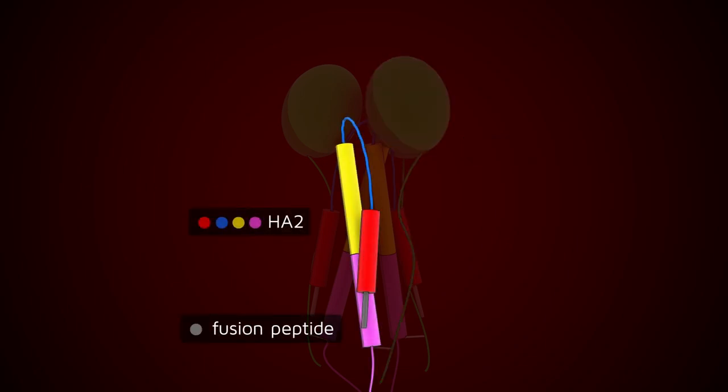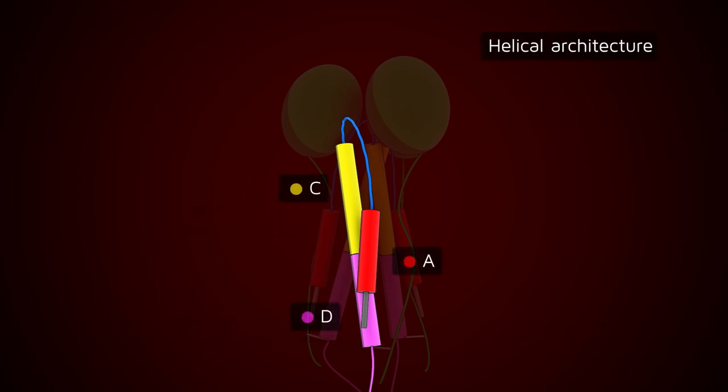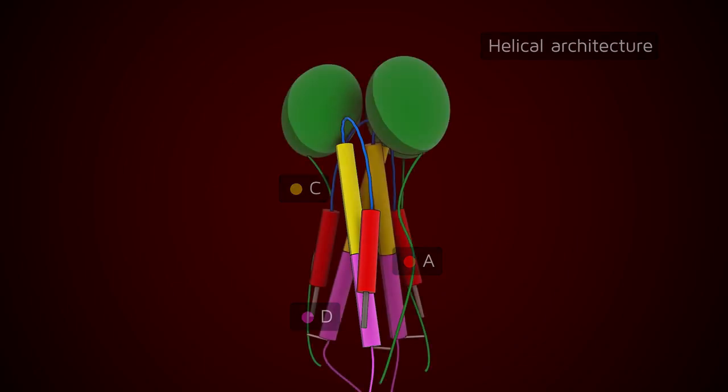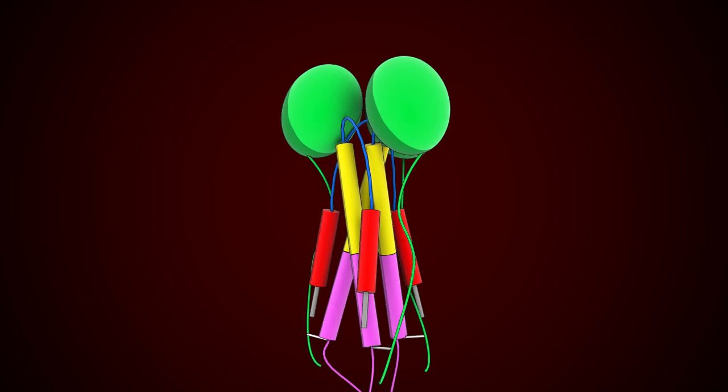It has a short sequence of hydrophobic residues called the fusion peptide at its amino terminal end. It is anchored in the viral membrane via its carboxy terminal end. This subunit exhibits long helices oriented perpendicular to the membrane. This helical architecture is characteristic of class 1 membrane fusion proteins.